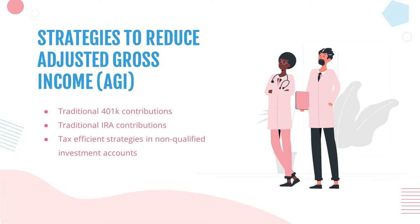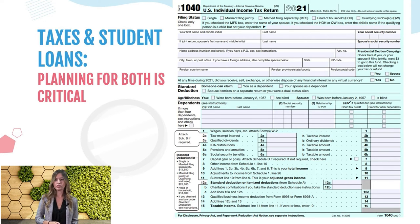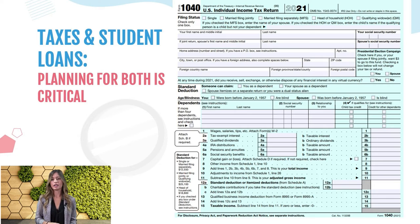The first and easiest strategy is making traditional 401k contributions. For example, if you make $100,000 in the year and put $10,000 into a traditional 401k, then instead of having $100,000 on line one for your wages, it would be $90,000. That's an easy way to lower your taxable income and adjusted gross income while also contributing to your financial goals and paying less to the government. Another way is traditional IRA contributions — based on your income, you can make a contribution up to $6,000 and have that taken off your income, lowering your adjusted gross income.